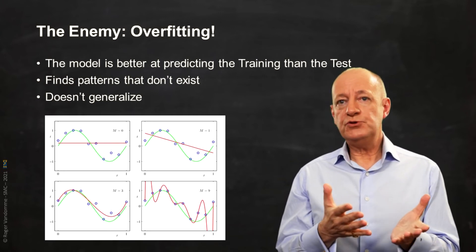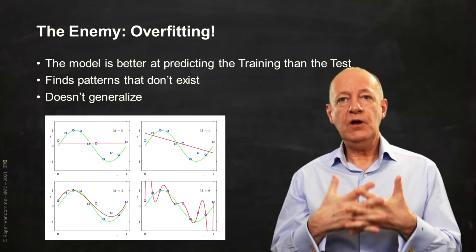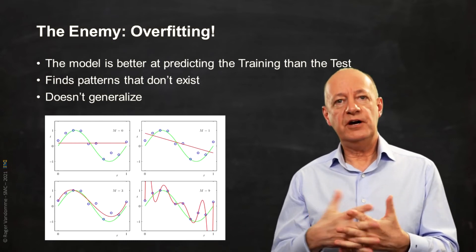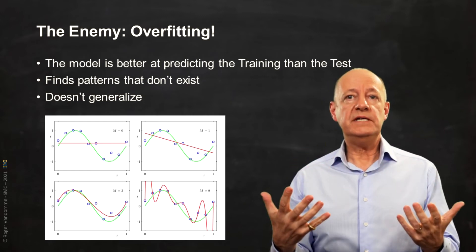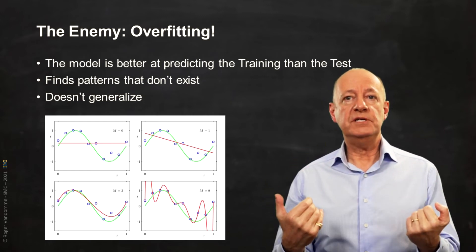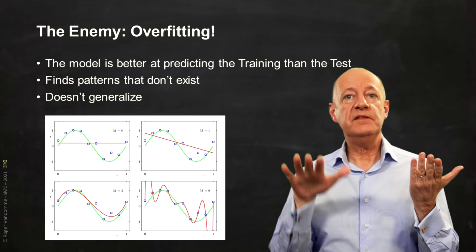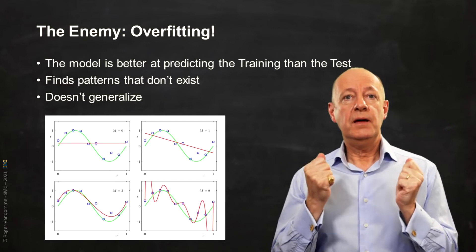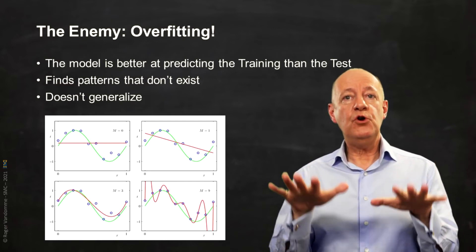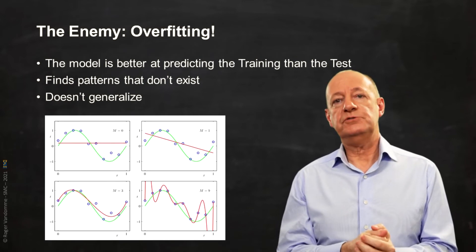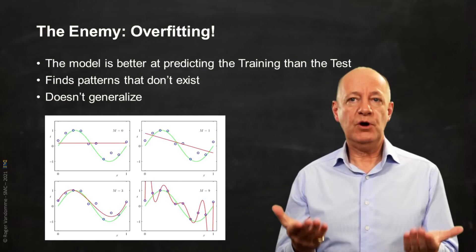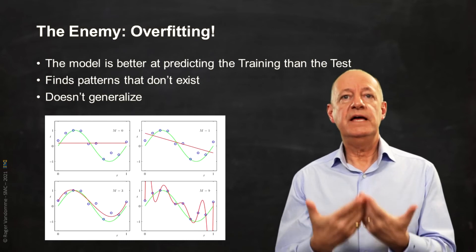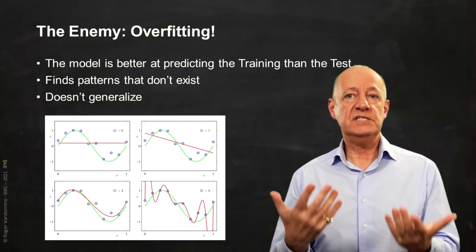Underfitting is also called bias. Overfitting is also known as variance. Once again, both are antinomic: if one decreases, the other one increases. But we are looking for a model with the lowest possible value for both measures. We are therefore condemned to another compromise — this is the bias-variance dilemma.